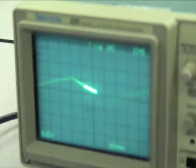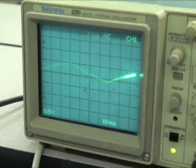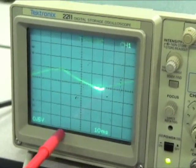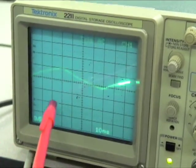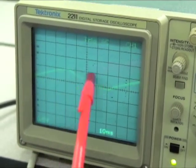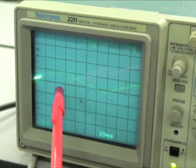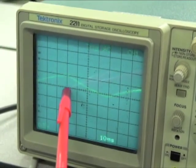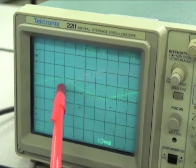The scope is currently set at 0.5 volt per division and 10 millisecond per division. This shows now that the rise time is 40 milliseconds, and the voltage is going from 0 to 0.5 volt, which is not quite what we said earlier, but this is what we are getting.